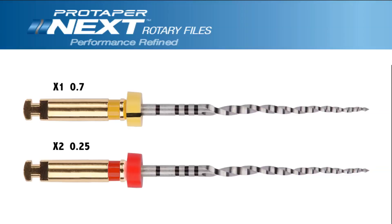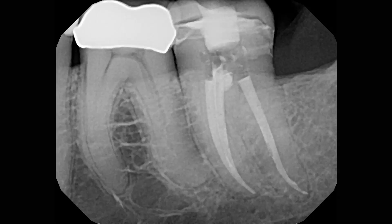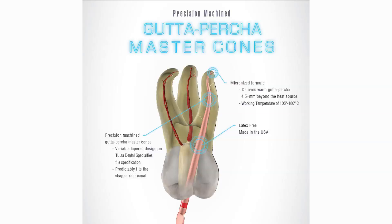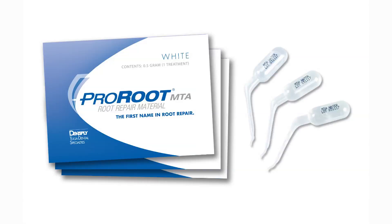The final shape was made with ProTaper Next files 1 and 2. The two canals in the mesial root joined at the root apex to exit a common foramen. These canals were filled to the coronal one-third of the root with gutta percha and ProRoot MTA was placed in the mesial canal opening to ensure a seal.